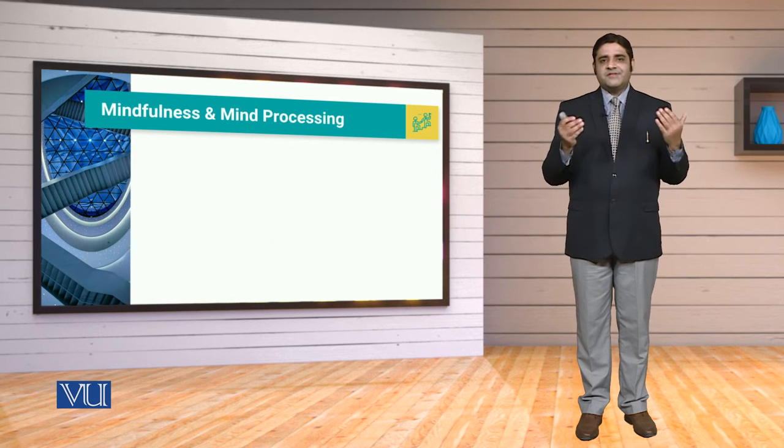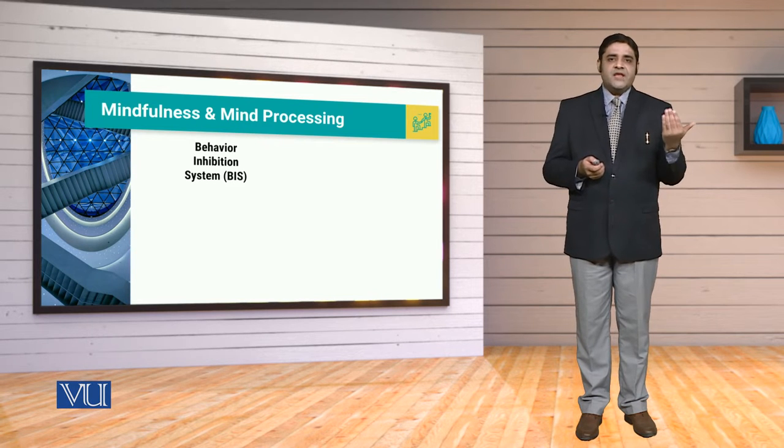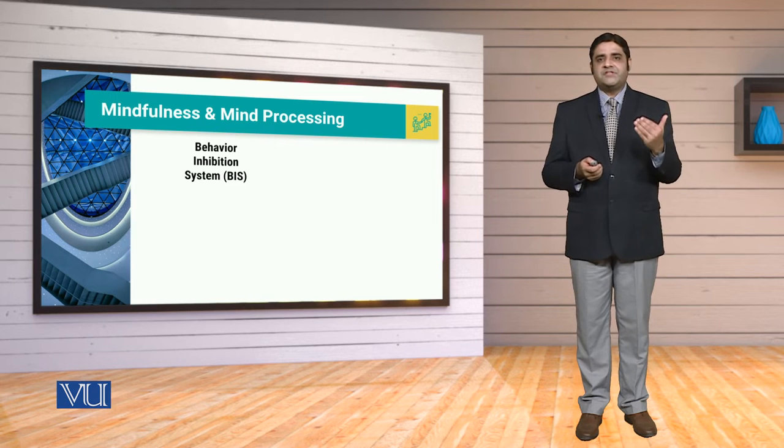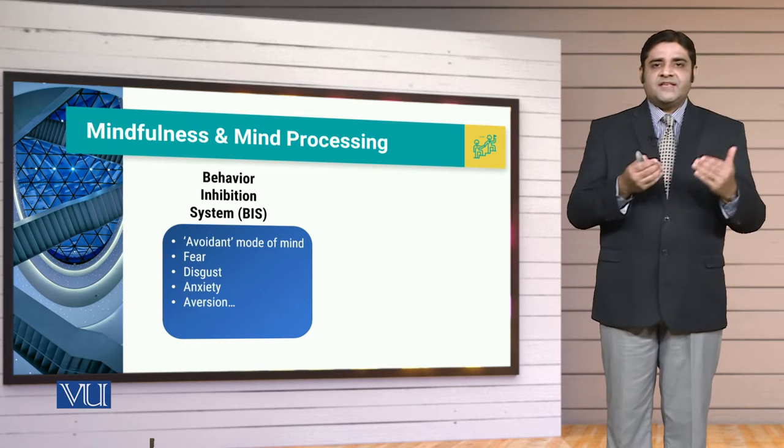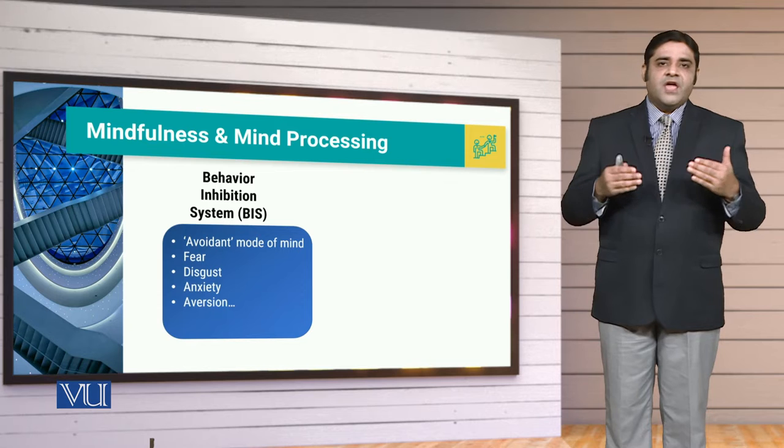When we talk about mind perceptions, there are two main aspects. Number one, it can be the Behavior Inhibition System. This Behavior Inhibition System is going to block our positivity, is going to create negativity in our thought processes, and is going to restrict our creative and innovative perspectives. When we talk about the Behavior Inhibition System, we are concerned with the avoidant mode of the mind — where we are indulged in fear, disgust, anxiety, or even aversion. These negative aspects are associated with triggering our avoidant approach of the mind.